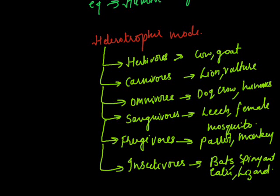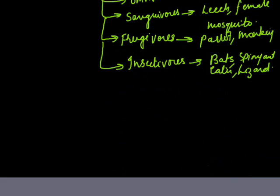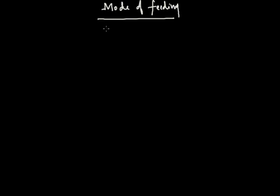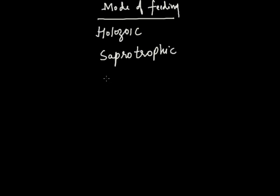This was the heterotrophic mode of nutrition categorized on the basis of the nature of food consumed. There is one more categorization for heterotrophic mode, which is based on the feeding habits of the organism. On the basis of mode of feeding, organisms can be categorized as holozoic, saprotrophic, or parasitic.